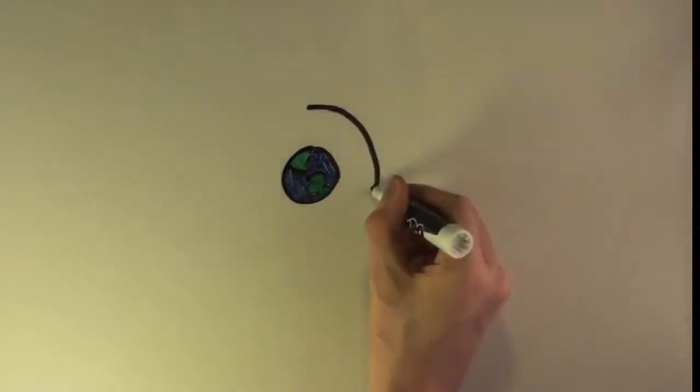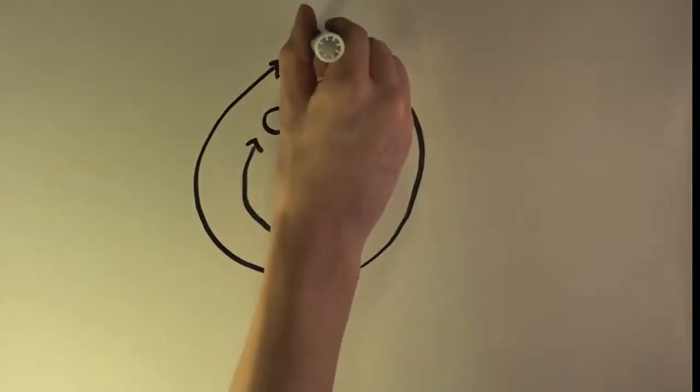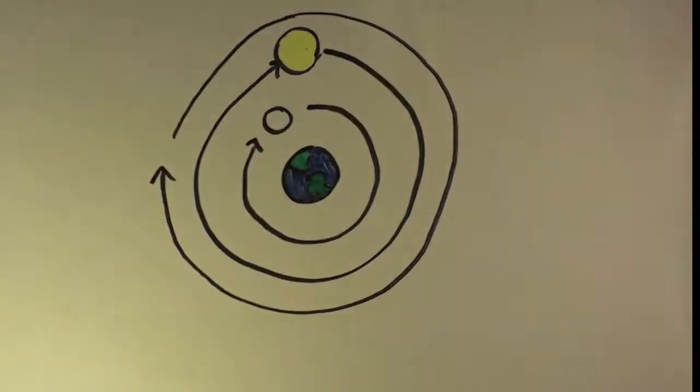At the time, this made perfect sense, because when we look up at the sky, it appears as though the sun, moon, and stars are orbiting around us.